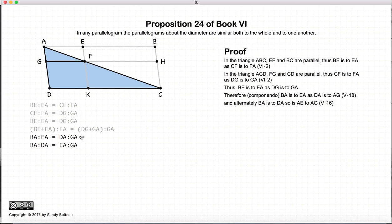And taking this relationship here and using the alternating proposition, which is 16 in Book 5, we can say if this ratio is true, then BA to DA is also equal to EA to GA. This is just some basic ratio mathematics. So now we finally have BA to DA is equal to EA to AG, and we need to keep this information for later.